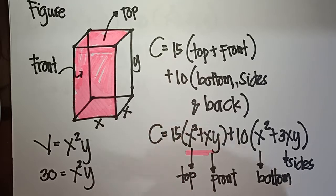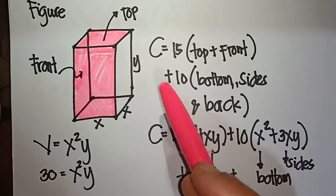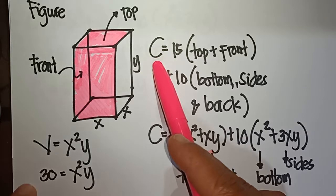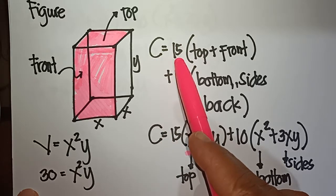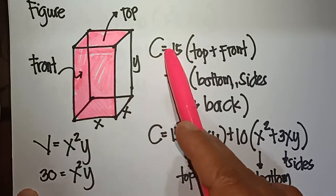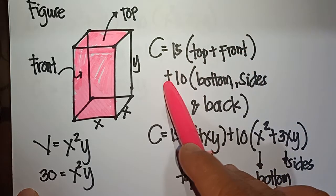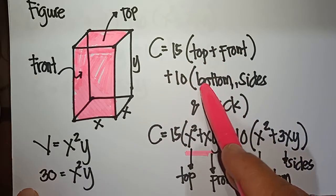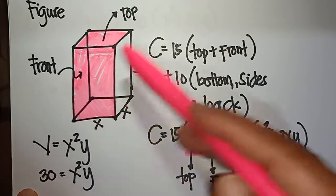The formula we are going to use: since we are finding the minimum cost, we find the derivative of the cost. Total cost equals 15 times (top plus front) plus 10 times (bottom plus the remaining three sides).